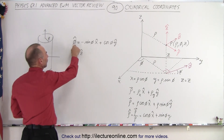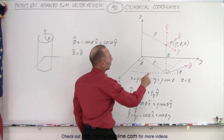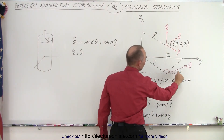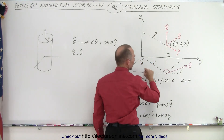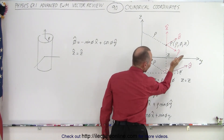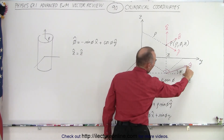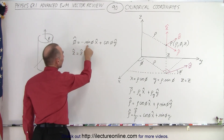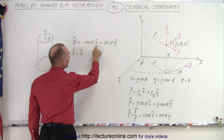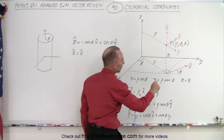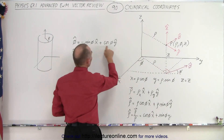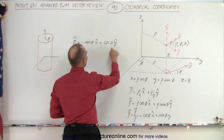To find the phi unit vector, notice that if we draw the unit vector projected down onto the XY plane, the angle phi here is the same as the angle phi in the projection. In the X direction, it's in the negative X direction, which is opposite to the angle phi. So the phi unit vector has negative sine of phi in the X direction. In the Y direction it is the adjacent side, so we multiply by cosine of phi. That gives the unit vector phi as negative sine phi in X plus cosine phi in Y.